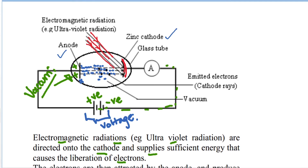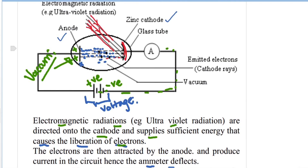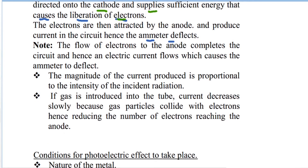When electromagnetic radiations like ultraviolet radiation are directed onto the cathode and supply sufficient energy, they cause liberation of the electrons. The electrons are then attracted by the anode and produce current in the circuit, hence the ammeter deflects — signaling that current is flowing and the circuit is completed.